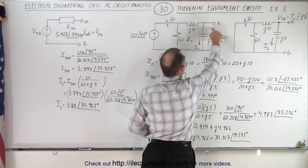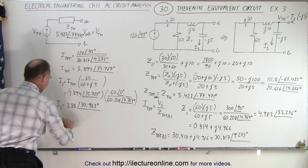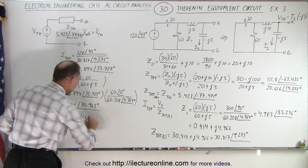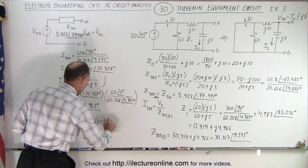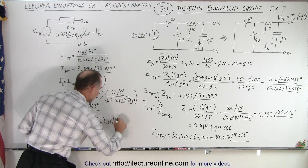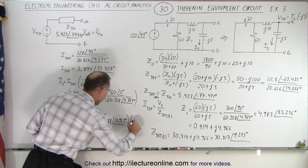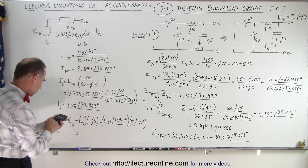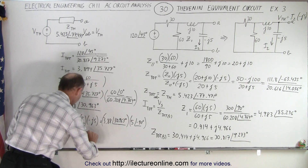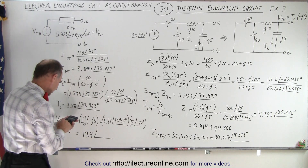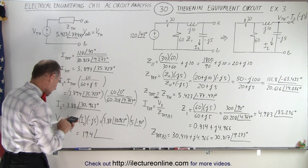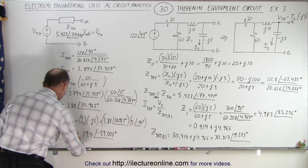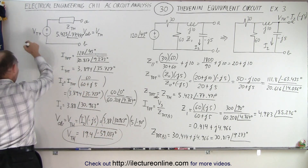Now we can calculate the voltage from A to B, which is the Thevenin voltage. V_AB equals I2 times minus j5, so that's 3.88 at 30.963 degrees multiplied times 5 at minus 90 degrees. This equals 3.88 times 5 = 19.4, with a phase angle of 30.963 minus 90 = minus 59.037 degrees.